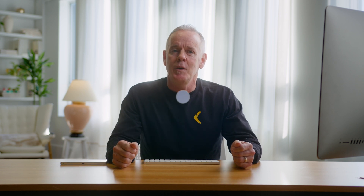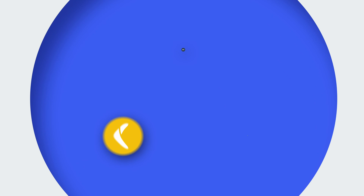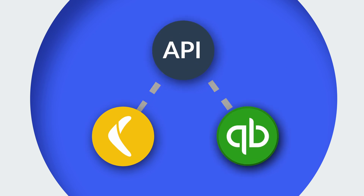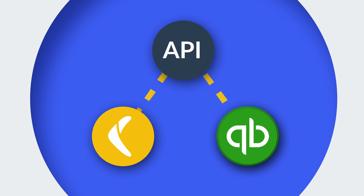APIs work in a similar manner. Rewind's API places a call to Intuit using the specially laid out definitions and security protocols. Intuit's API decodes the request and safely sends the information back to the Rewind app using the same encryption protocols laid out in the API definition.